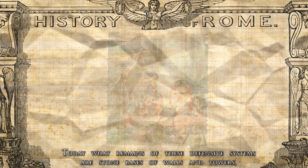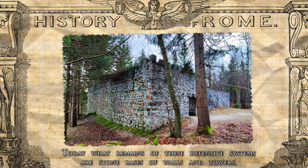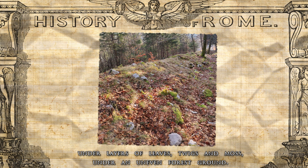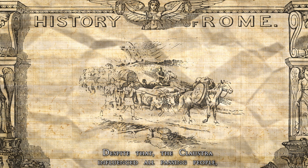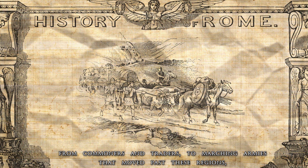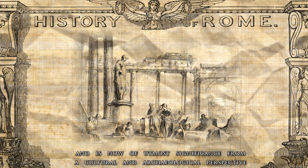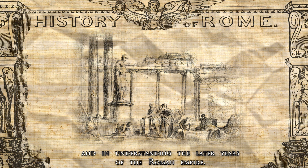Today, what remains of these defensive systems are stone bases of walls and towers, some well-preserved or reconstructed, while others hide under layers of leaves, twigs, and moss under an uneven forest ground. Despite that, the Claustra influenced all passing people, from commoners and traders to marching armies that moved past these regions, and is now of utmost significance from a cultural and archaeological perspective and in understanding the later years of the Roman Empire.